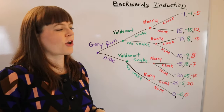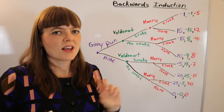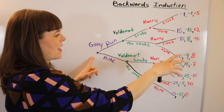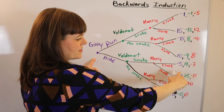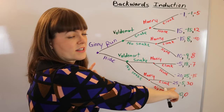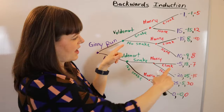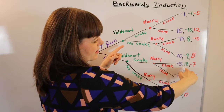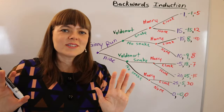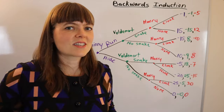Before we start, I want to make an important point. If Jenny looks forward into the game she'll see a payoff of 25 and want to reach it. Voldemort will do the same, and so will Harry. But the key point is that these players actually have no control over reaching the payoffs they want — you'll understand why in a second.